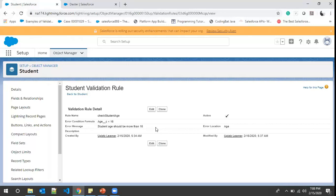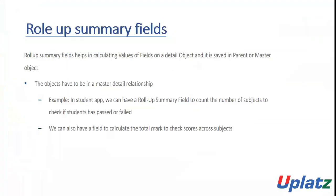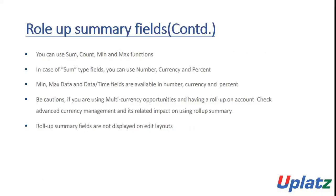The next topic is rollup summary fields. In our earlier modules when discussing data types we left a few types to be discussed later — we've covered formula fields, and now rollup summary remains. Rollup summary fields help calculate values of fields on a detail object and save them in the parent or master object. The objects must be in a master-detail relationship. For example, in the Student app we can have a rollup summary field to count the number of subjects, check if a student has passed or failed, or calculate total marks. You can use SUM, COUNT, MIN, and MAX functions.